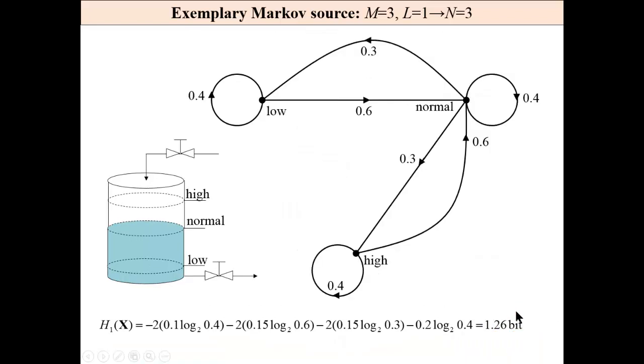This is a graphical interpretation of these conditional probabilities. As you can see, there is no transition between low and high. It is impossible to move from this state to this state due to the short sampling time.